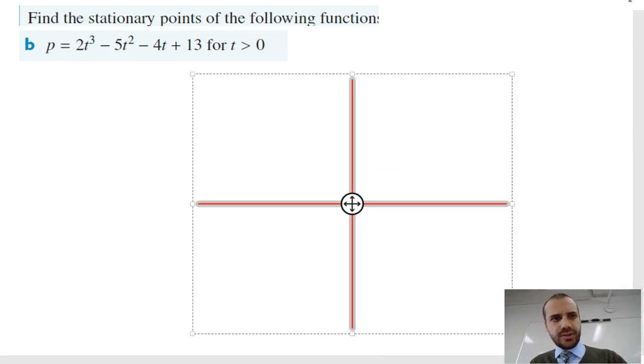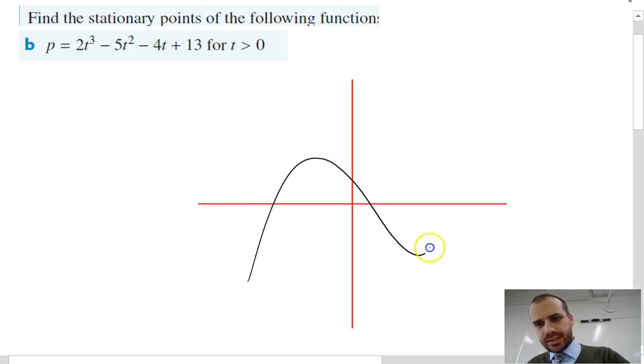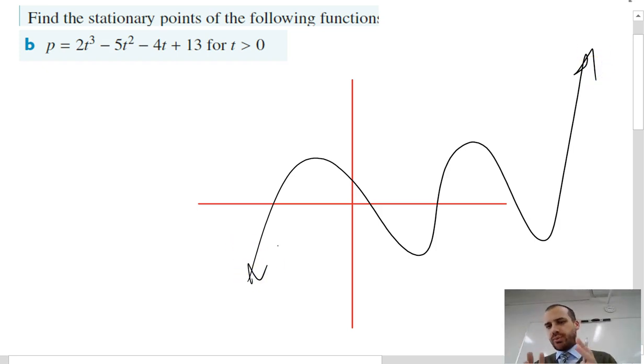If I've got a function here, the stationary point, let's say there's my function. Stationary points are where the roller coaster is not going up and it's not going down. In other words, a stationary point is a turning point. That's a turning point, that's a turning point, that's a turning point, and that's a turning point.